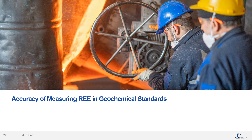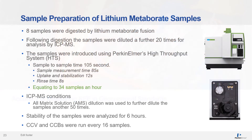Now we're going to look at the accuracy of measuring rare earth elements in geochemical standards. For this study, eight samples were digested using lithium metaborate fusion. Following digestion, the samples were diluted a further 20 times for analysis by ICP-MS. The samples were introduced using PerkinElmer's new high throughput system or HTS. The sample time was 105 seconds, consisting of a measurement time of 85 seconds, uptake and stabilization of 12 seconds, and a rinse time of 8 seconds, equating to about 34 samples an hour.